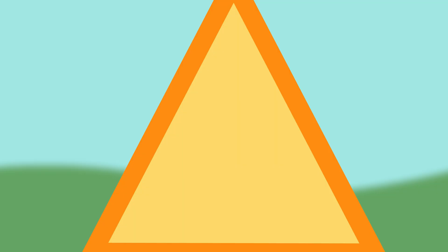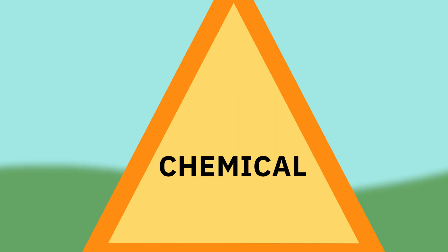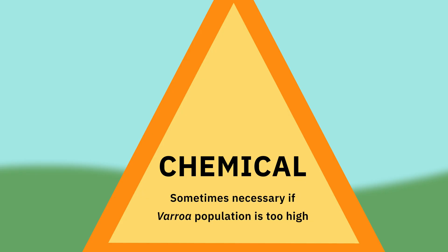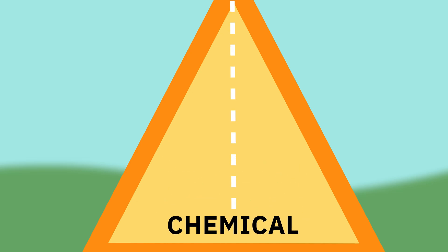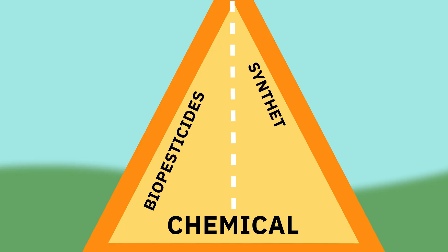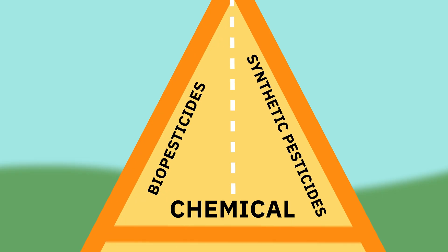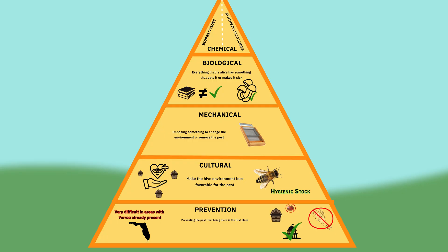Moving up from biological control, you then have chemical control. A lot of people erroneously believe that the purpose of IPM is to eliminate chemical control, but in reality chemical control always remains on the table as an alternative — and would arguably be necessary if your Varroa populations reach the economic threshold. Chemical control can be largely split into two categories: biopesticides and synthetic ones. From the biopesticide perspective, examples include thymol or formic acid-based treatments. The synthetic options include compounds such as amitraz or fluvalinate.